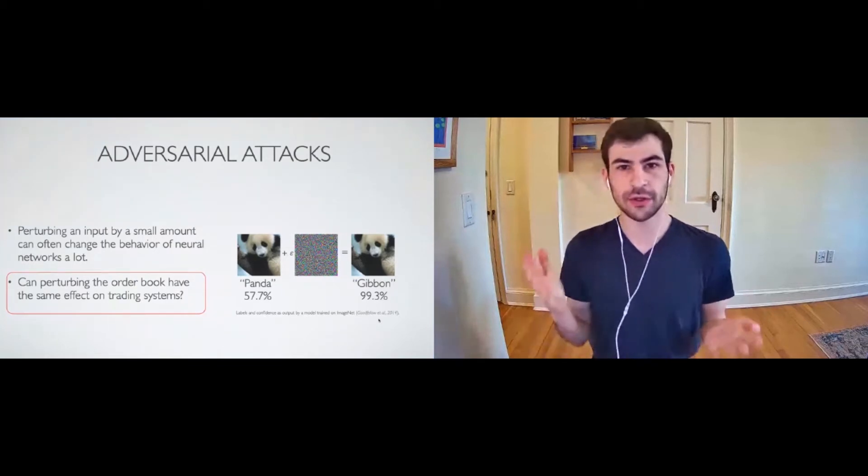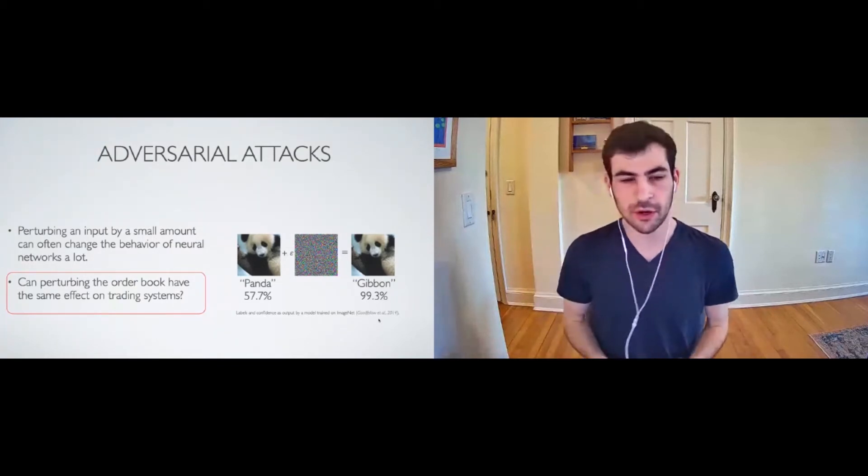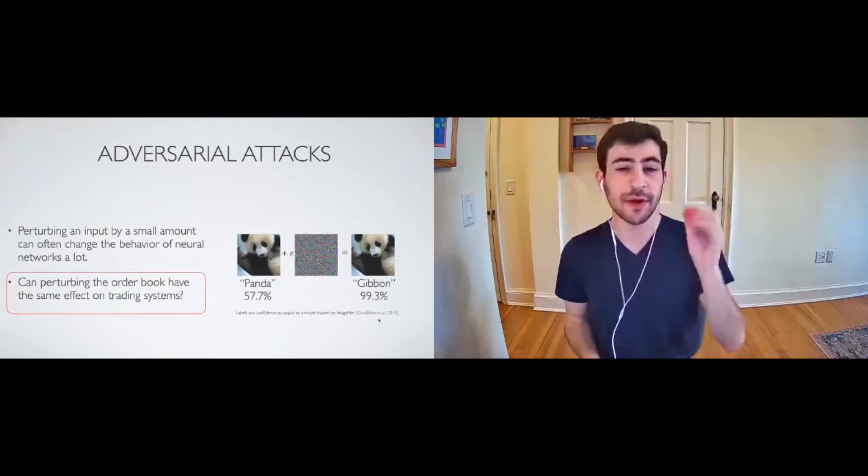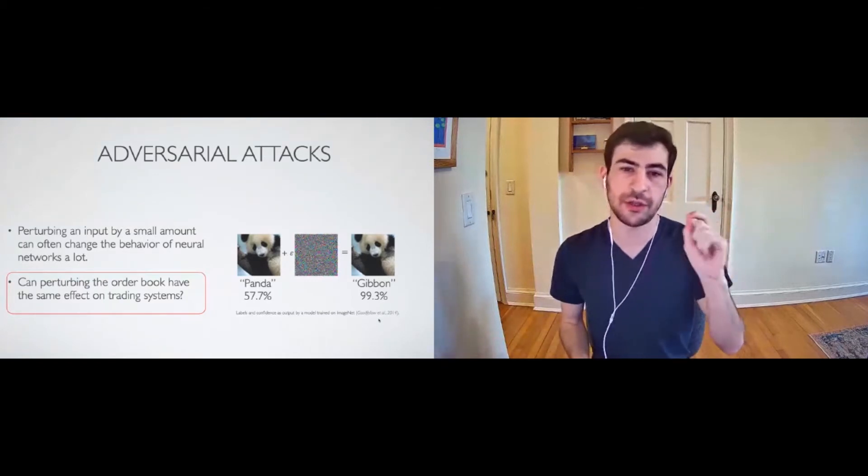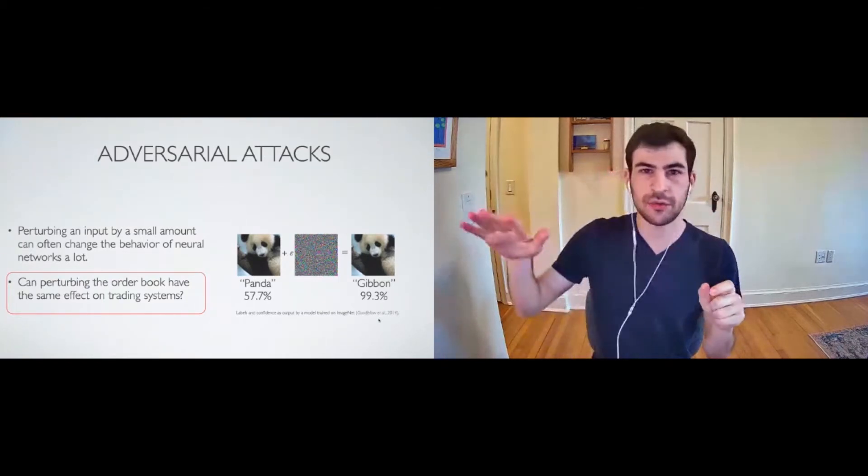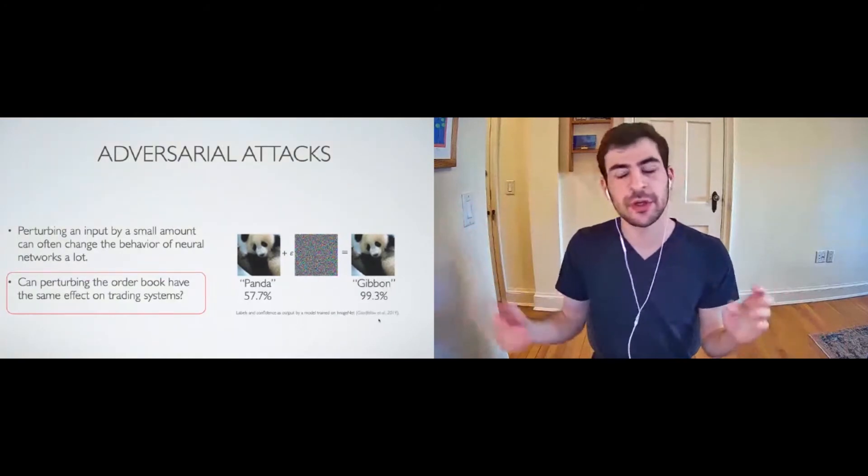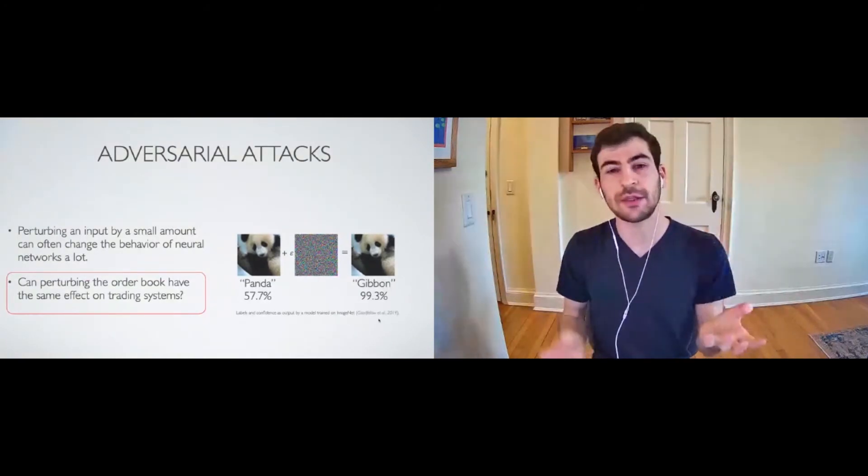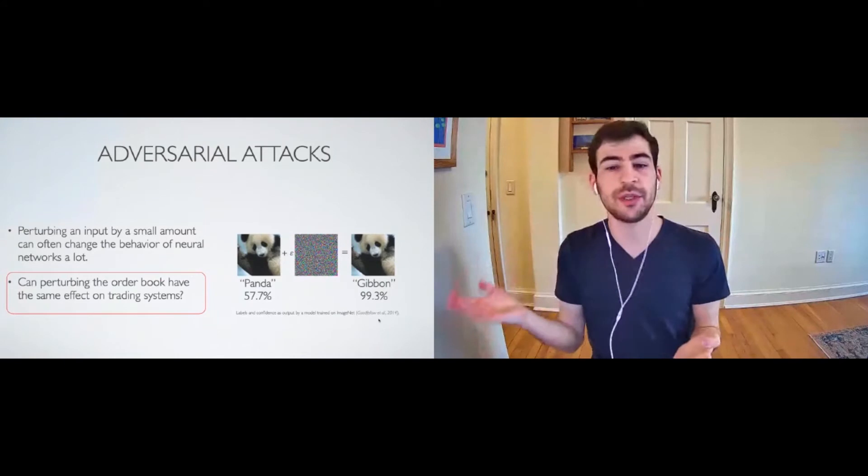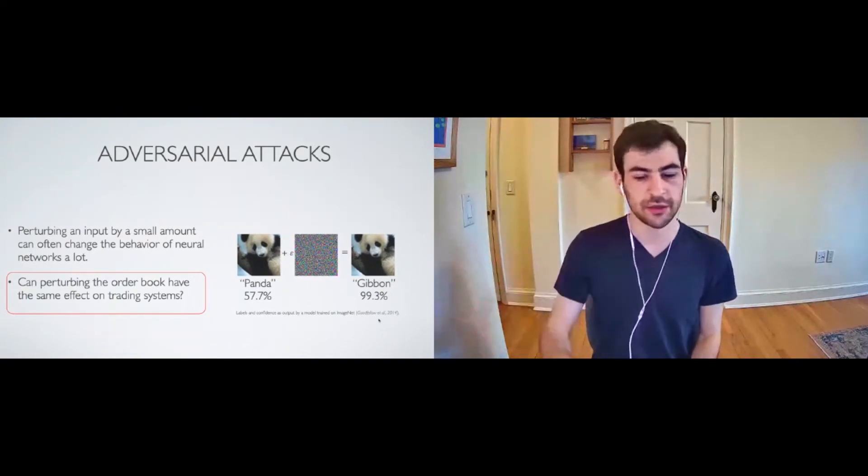The question we're going to talk about today is can perturbing the order book have the same effect on trading systems? We want to know if these neural networks that are doing price valuation are vulnerable to the same type of thing. Can very minute changes to the order book, such that the actual size weighted average doesn't move, can those affect these neural network models and fool them into misclassifying segments that they were previously classifying correctly?